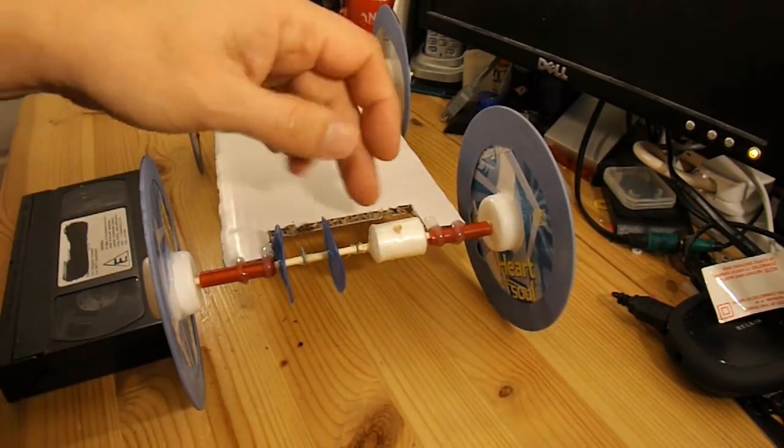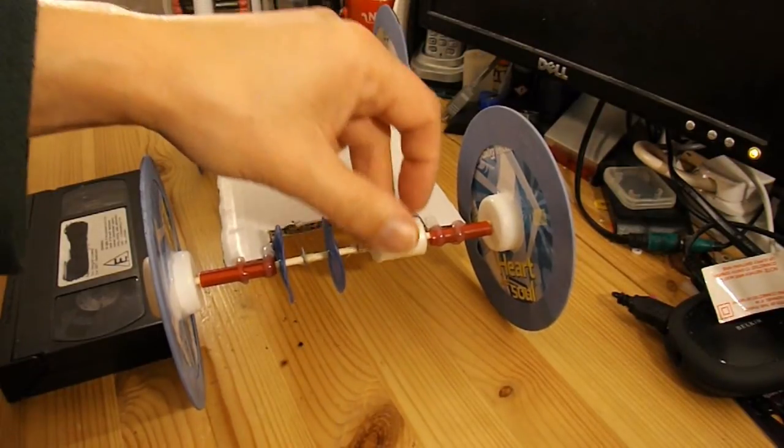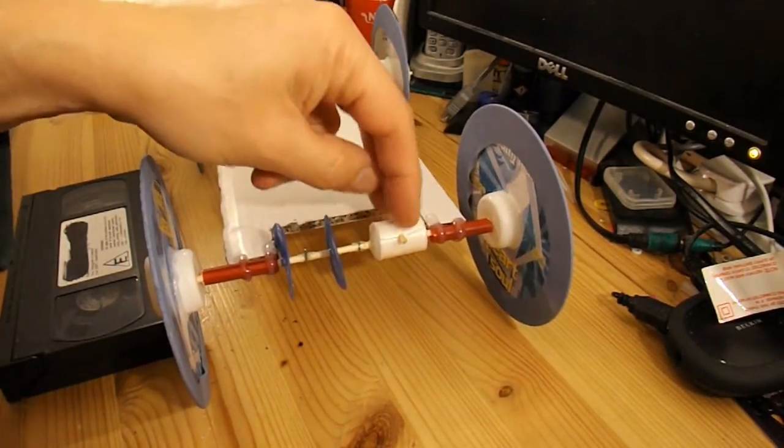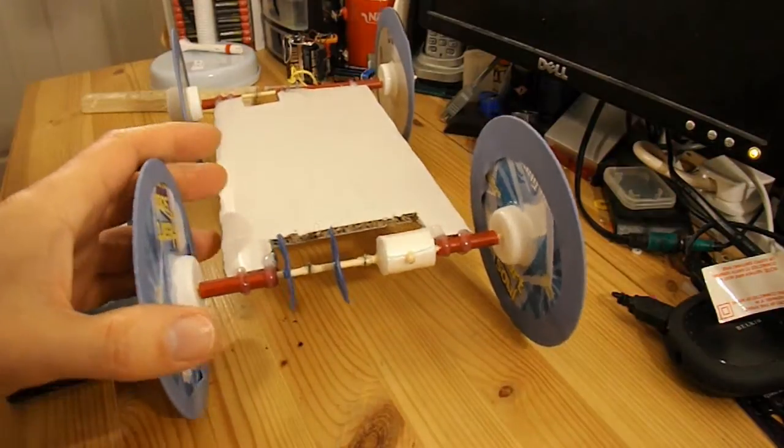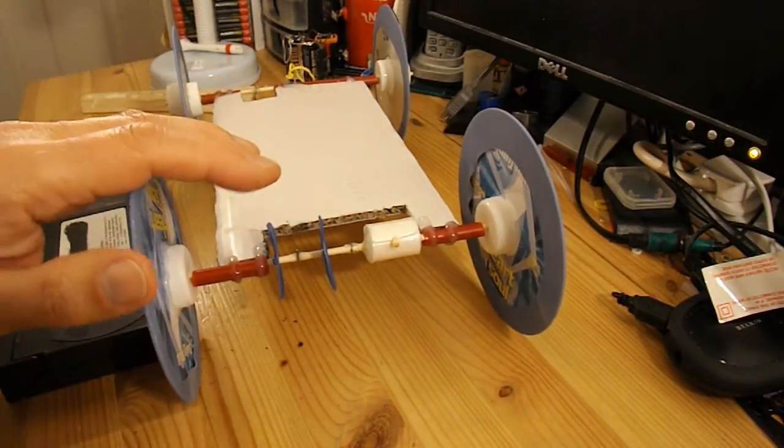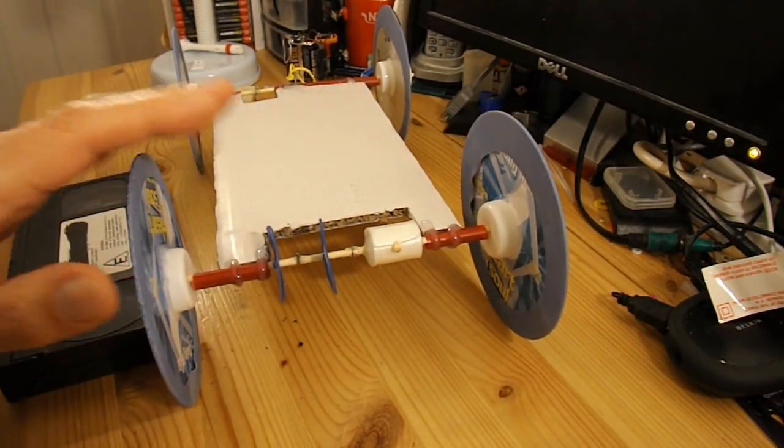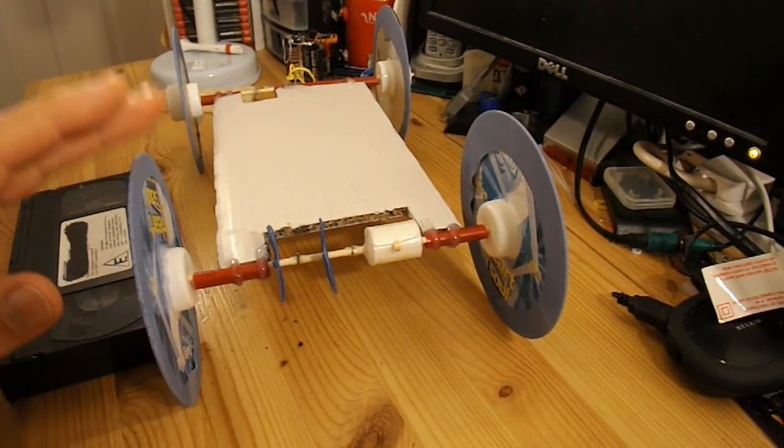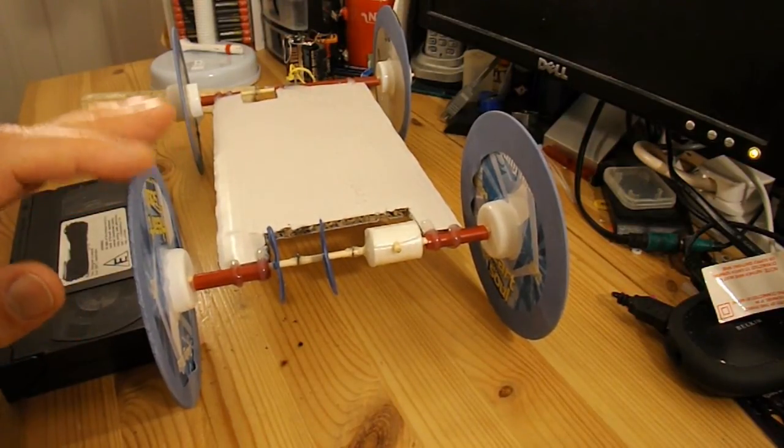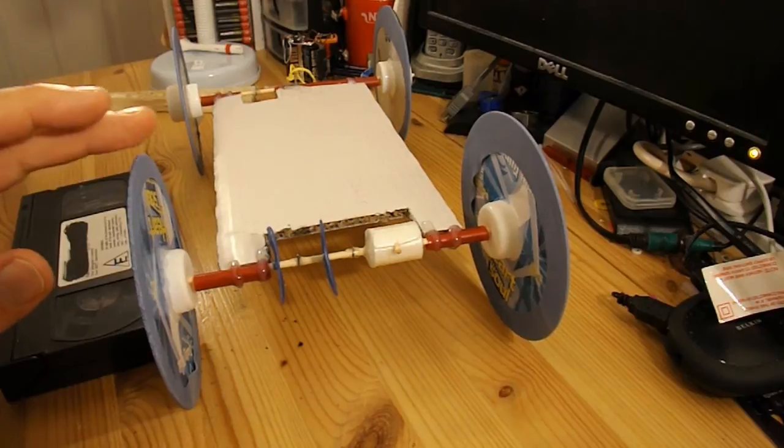We also modified it by putting a thicker axle on it so we could improve the acceleration. For today's episode we're going to try and improve the braking mechanism so that when it stops it stays still, because at the moment when it stops it then rolls back a bit.